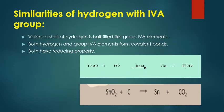Now we move to the second comparison — Group 4A, the carbon family. The first similarity: the valence shell of hydrogen is half-filled. The valence shell is the S orbital, which can hold two electrons total, and hydrogen has one — so it is half-filled. Similarly, Group 4A elements also have half-filled valence shells.